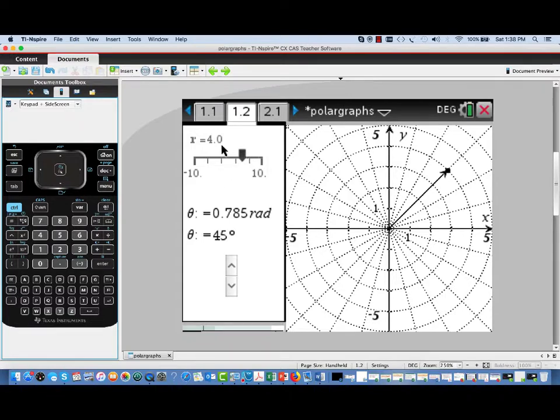In one window, we have a couple of sliders. One controls the radius, and the other slider controls the angle.